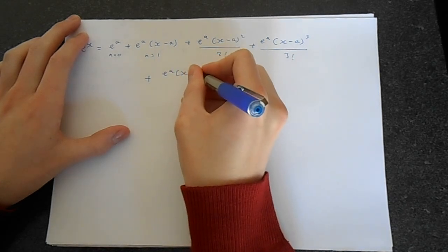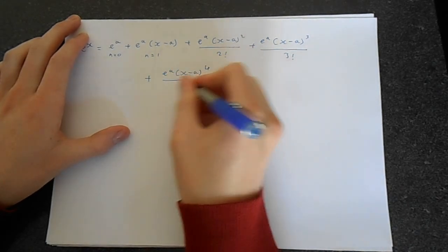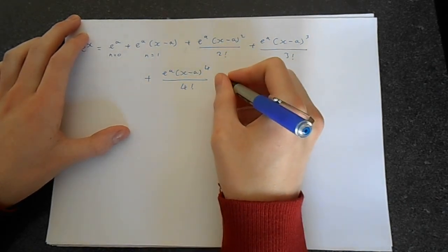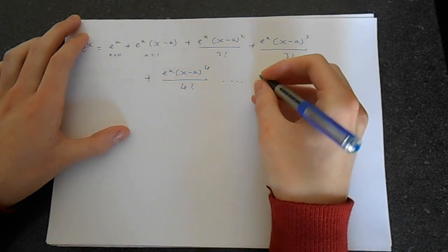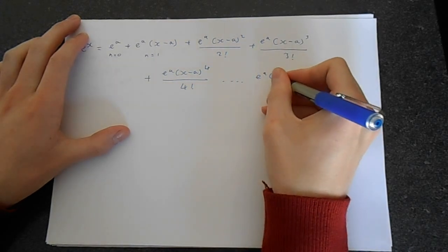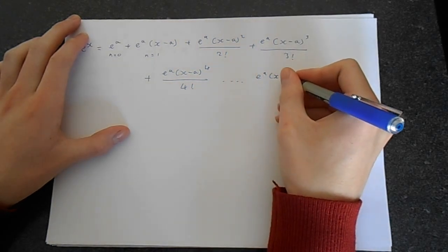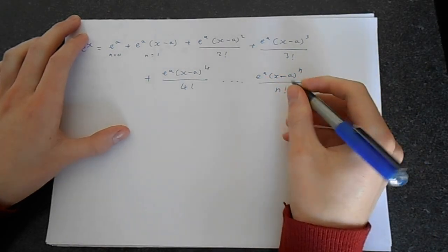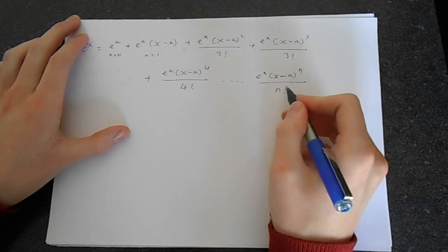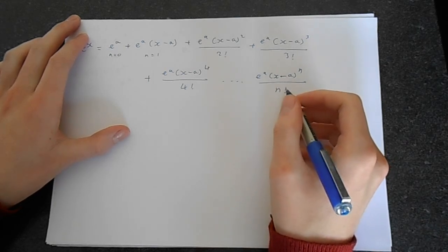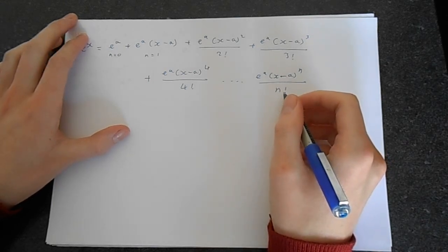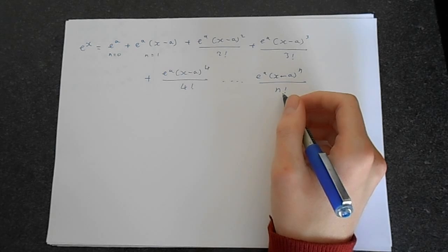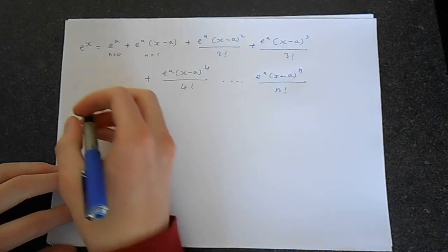Just one more term: e to the a, x minus a to the 4th over 4 factorial. And so the last term is going to be e to the a, x minus a to the n over n factorial. And usually we can look at this term as kind of gives us the pattern.